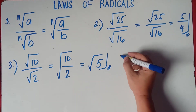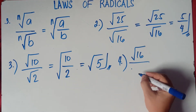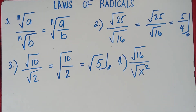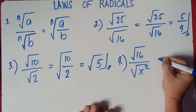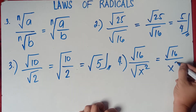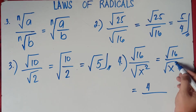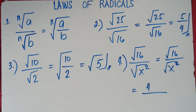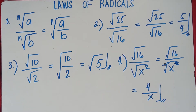Example number 4: the square root of 16 over the square root of x squared. Can we divide 16 by x squared? No, so we do it individually. The square root of 16 is 4, because 4 times 4 is 16. For the square root of x squared, using rule number 1 — if the index and the exponent are the same, we can cancel them out. The index is 2 and the exponent is 2, so the square root of x squared equals x. Therefore our answer is 4 over x.